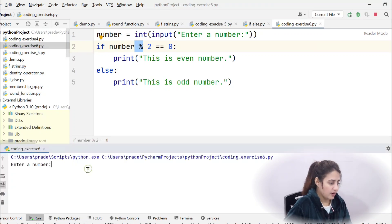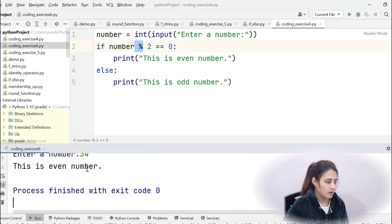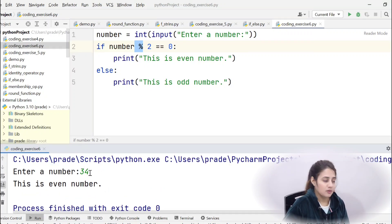Let's run this and enter a number, 34. Obviously 34 is even number, so this is even number. Let me run this again.